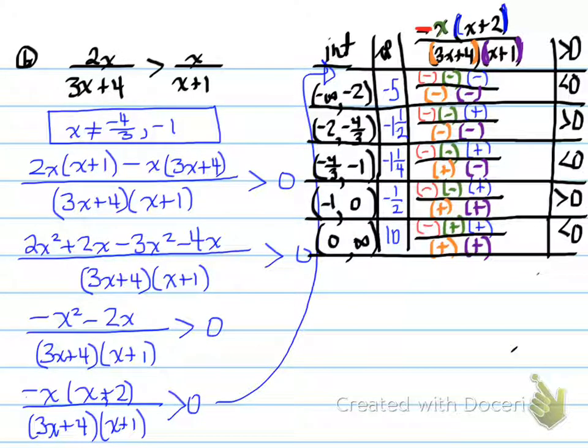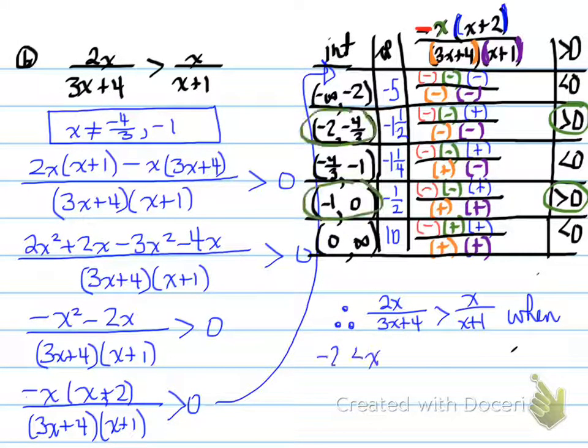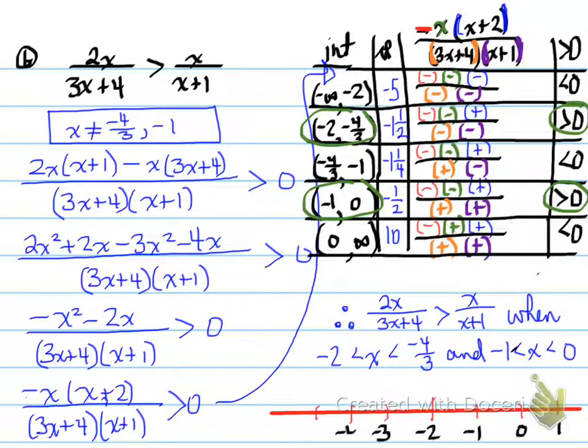We're going to compare when it's greater than zero. That's what we're looking for. That's going to be true when it's this interval and this interval. The inequality is true when the following happens. X is between negative two and negative four over three, and when X is between negative one and zero. Looking at the number line, we plug in the values, and this is what we're looking for.